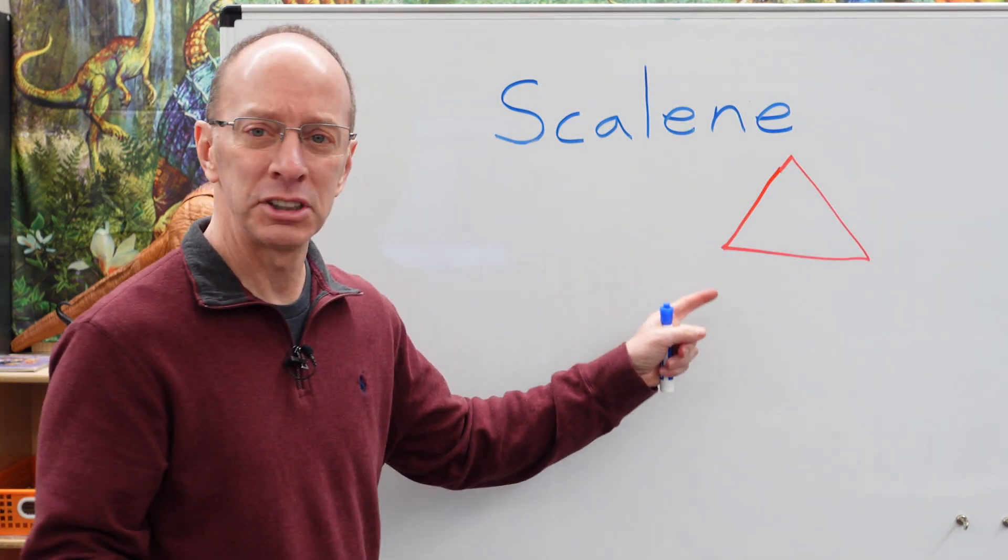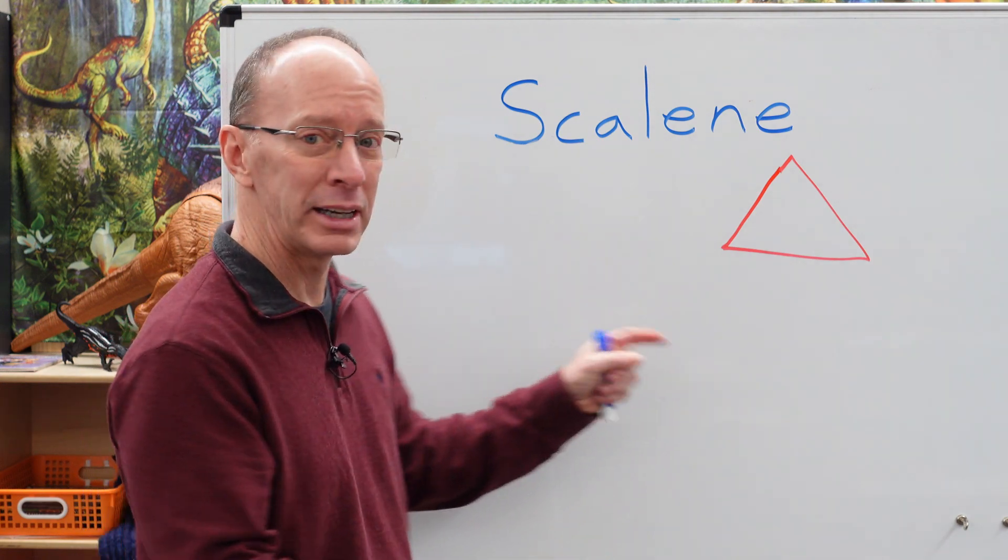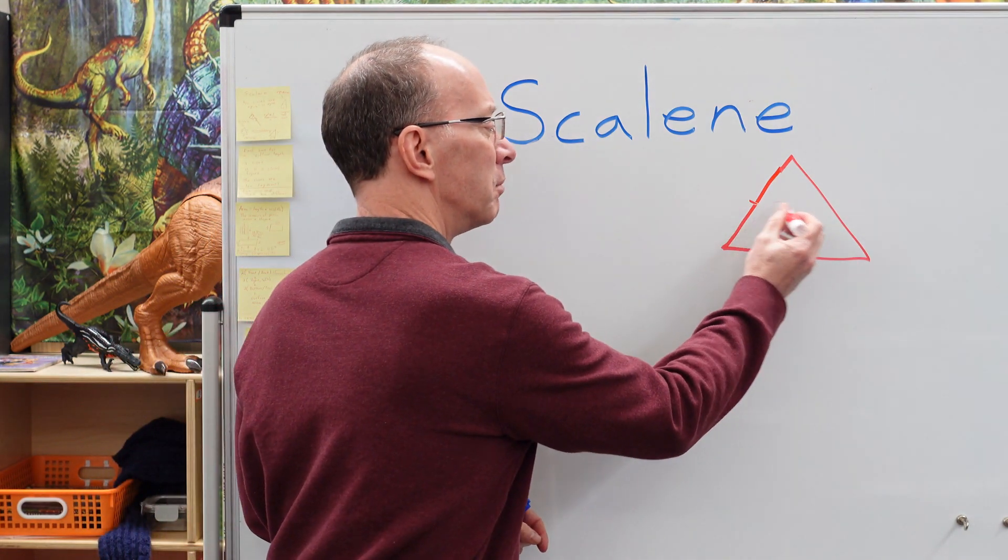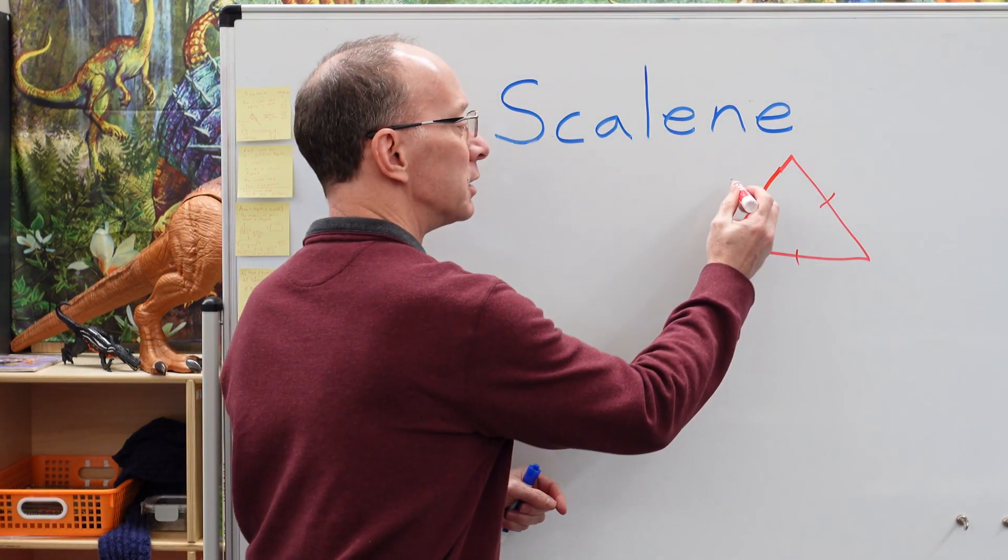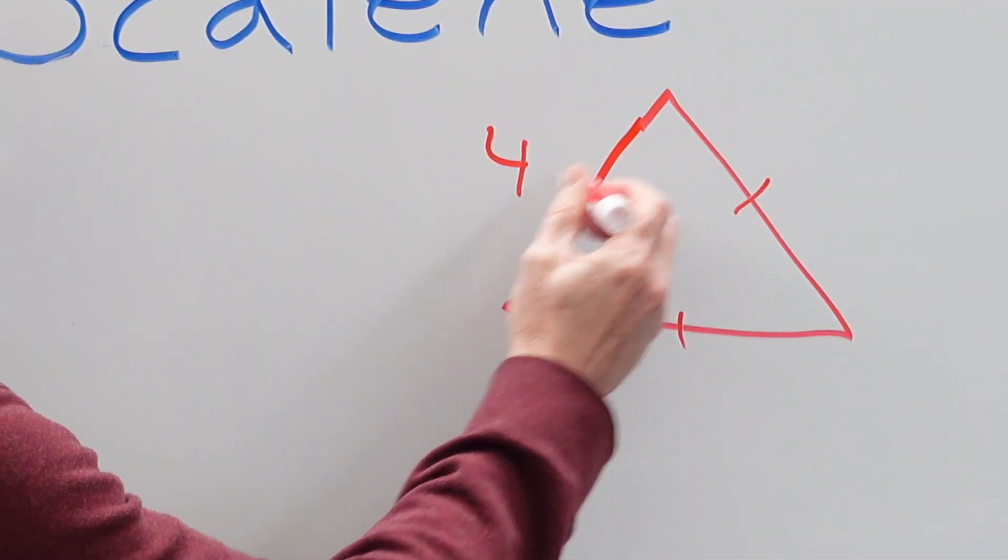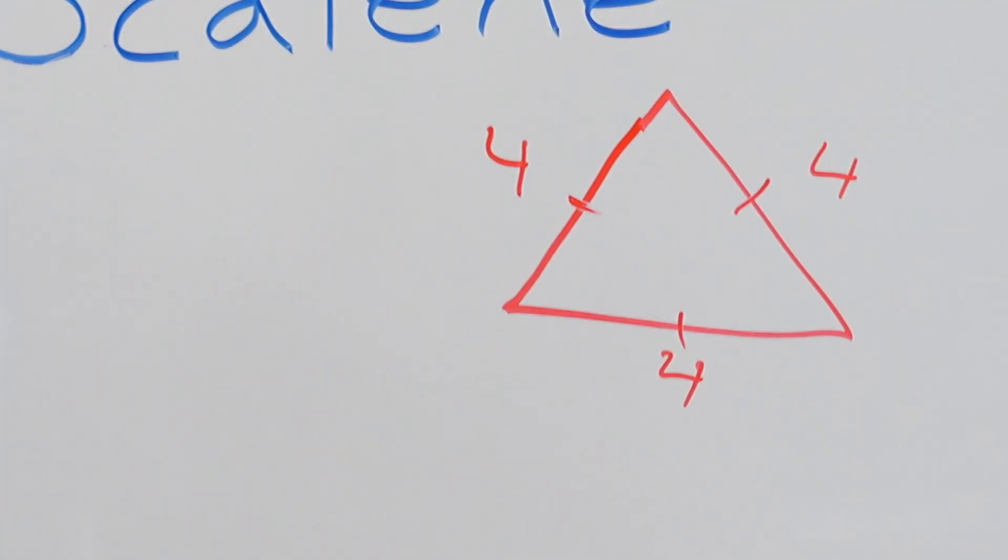This type of triangle is even on all sides. So for me to mark it like even, I would put a little mark right here. So for instance, if this was four inches, this would be four inches, and this would be four inches.